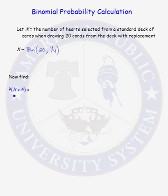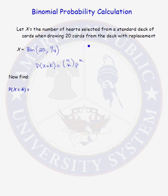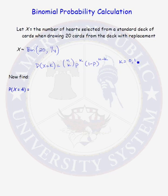We know that X has a binomial distribution. Recall the probability distribution function for a binomial random variable: the probability that X equals K is N choose K, times the probability of success raised to the Kth power, times 1 minus P to the N minus K power. We have K successes and N minus K failures.